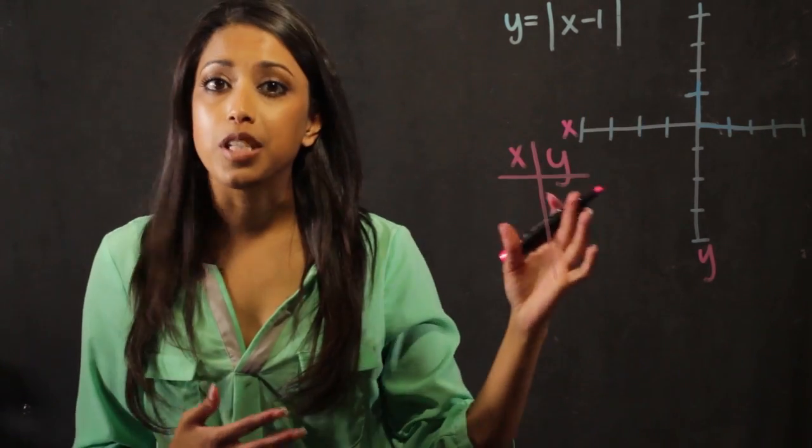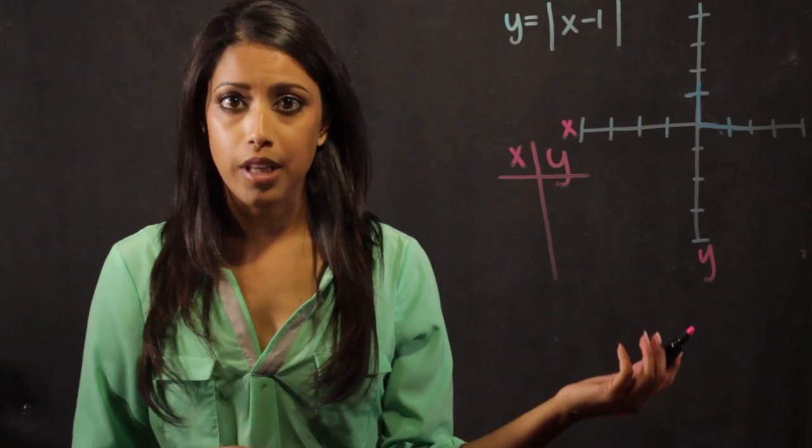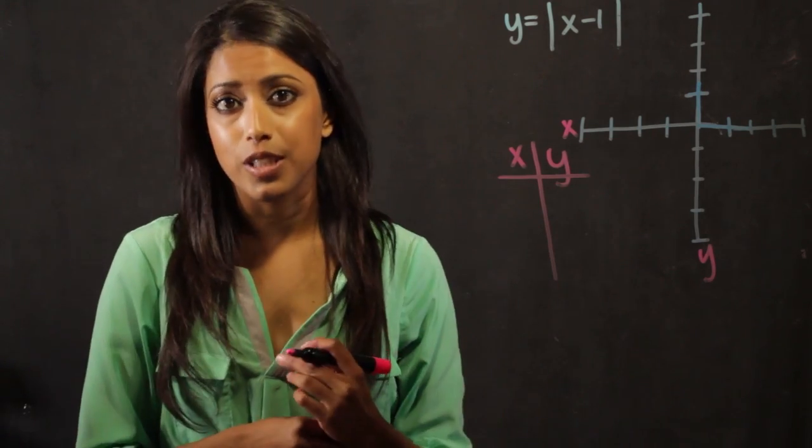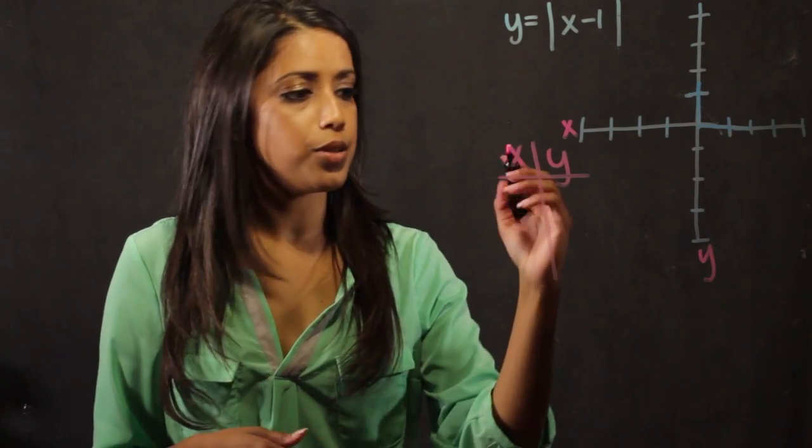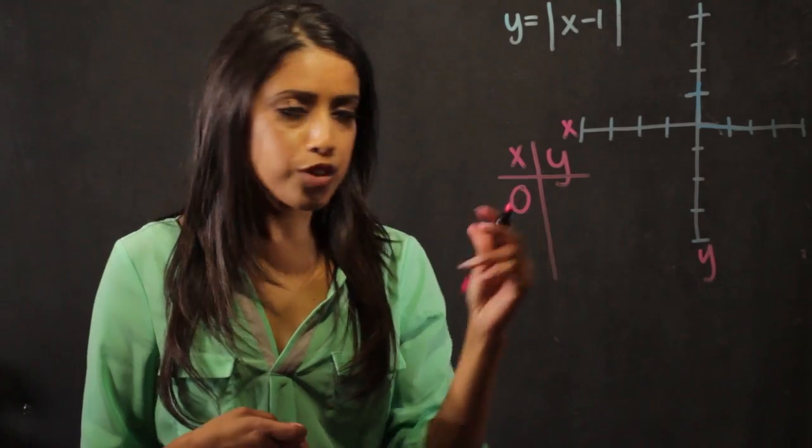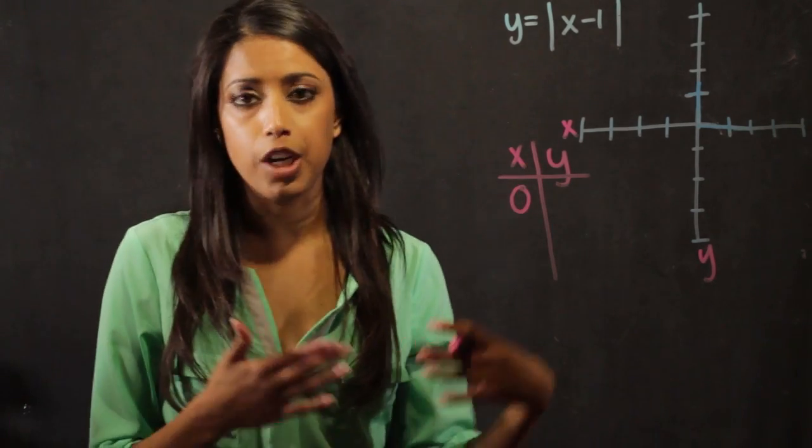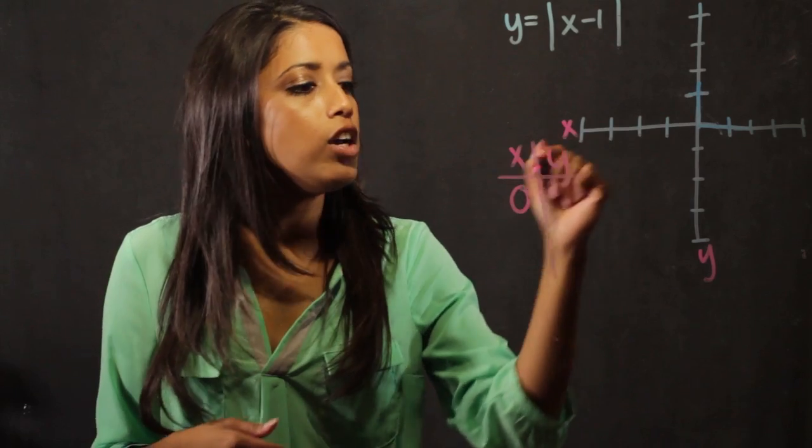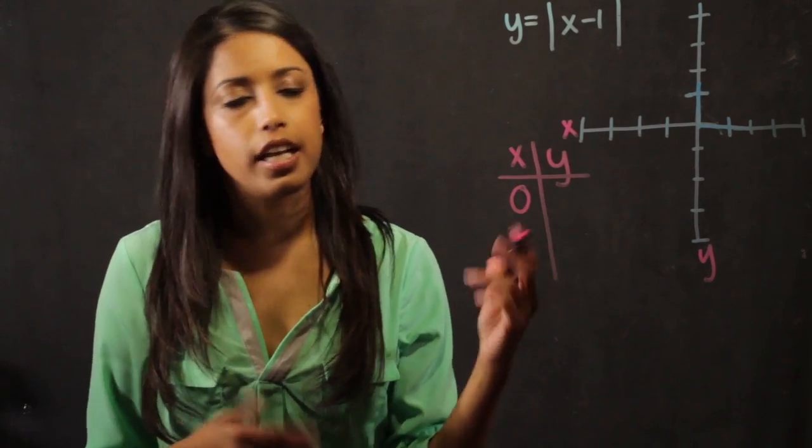What we do is pick a point on the graph and let x equal that value. Generally, I start with 0 because it's the easiest. So let's let x equal 0. When we let x equal 0, we want to know what's happening on the y side, so I plug 0 into my equation and solve for y.